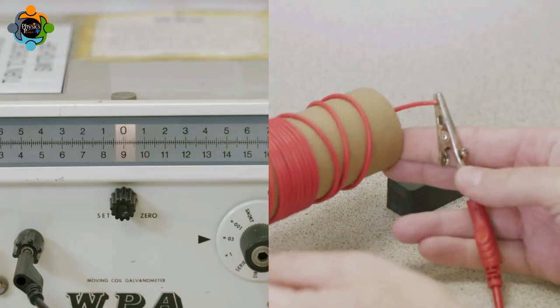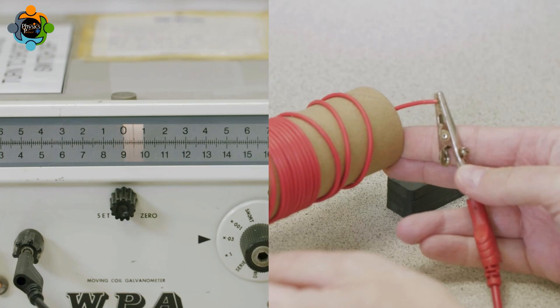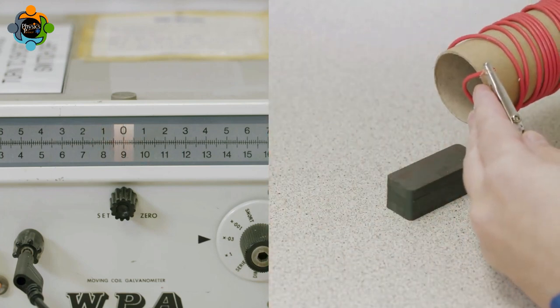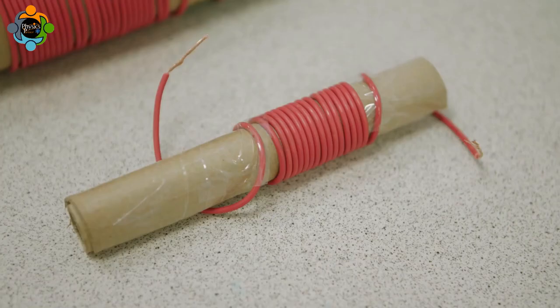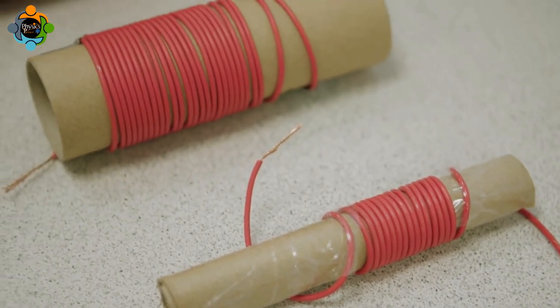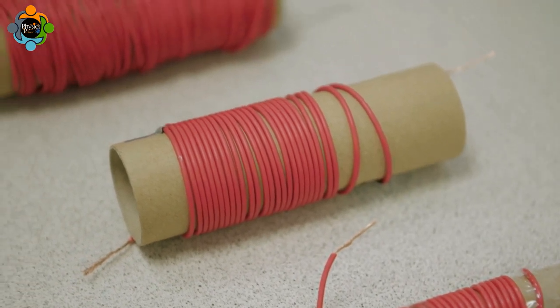This demonstrates that it is the movement of the wire and magnetic field relative to one another that causes the EMF to be induced. Any factor that affects the rate of change of magnetic flux linkage will affect the magnitude of the induced EMF.